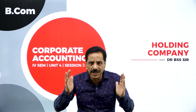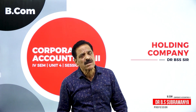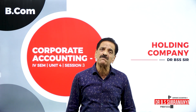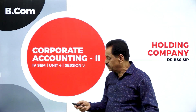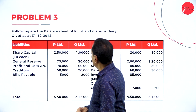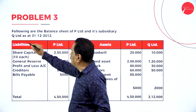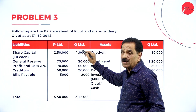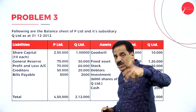Hello, my dear students. I am Dr. B.S. Subramanya, Professor in Commerce and Management, Vidyashram First Grade College, Mysuru. Following are the balance sheets of P-Limited and its subsidiary Q-Limited. P is called the holding company and Q is called the subsidiary company, where P is taking over Q-Limited.